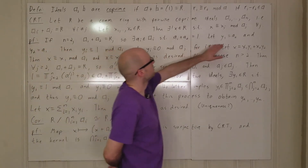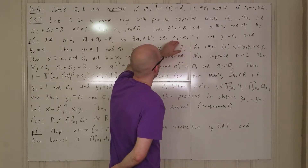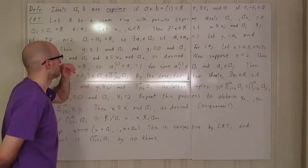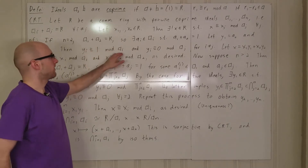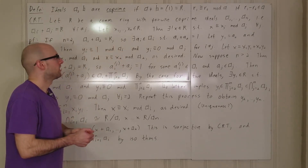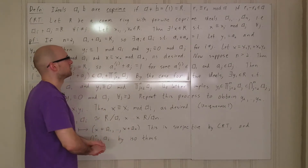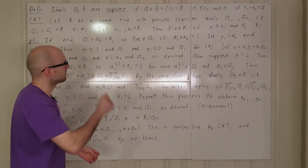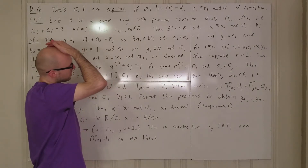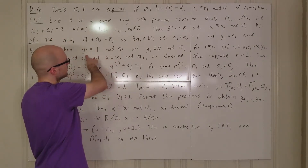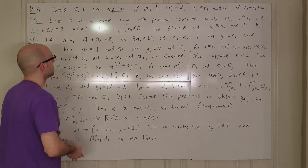Since y1 is a2, we have a2 minus 1 equals negative a1. Since a1 is an ideal it's closed under multiplication, so a1 in a1 implies negative a1 is in a1, and negative a1 equals y1 minus 1, which is exactly what we need. By the same argument, y2 is congruent to 1 mod a2.